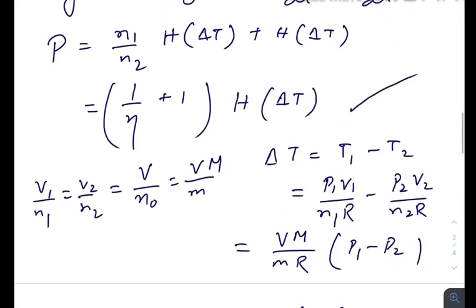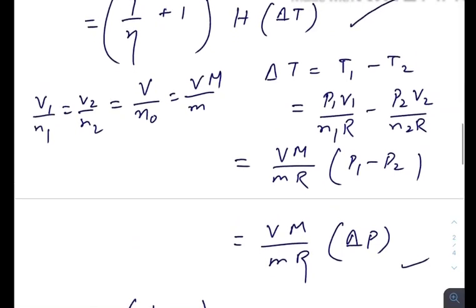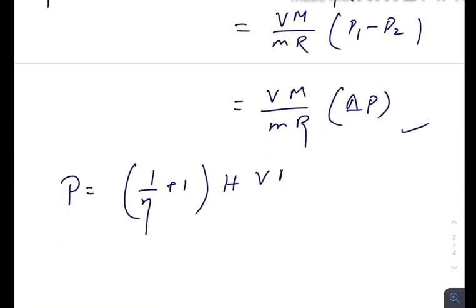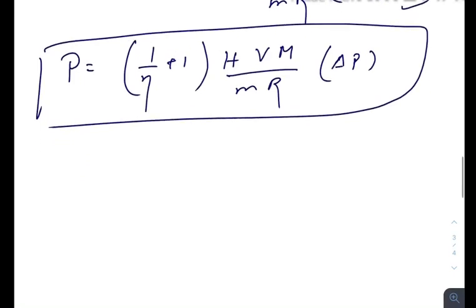Just plug it in here. You will get P = (1/η + 1)·H·V·M/(m·R)·ΔP. So this is the formula for the power source and the pressure difference.